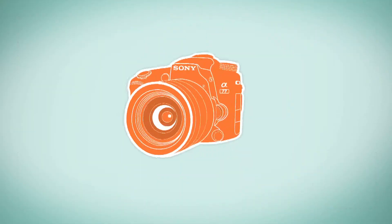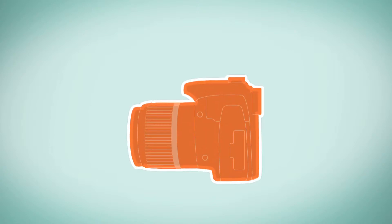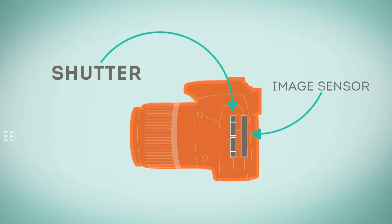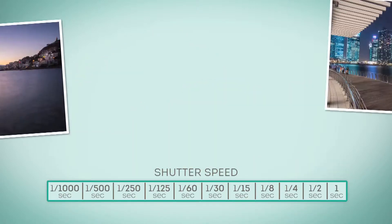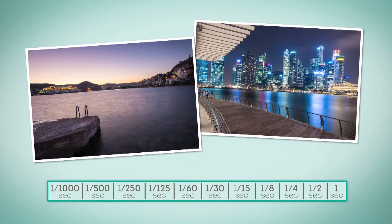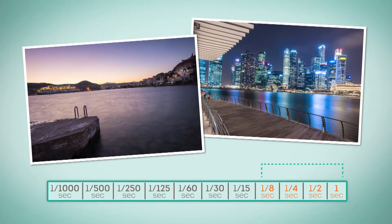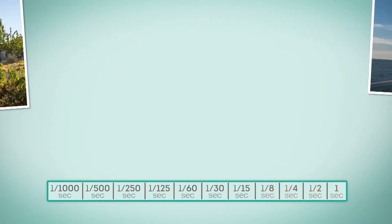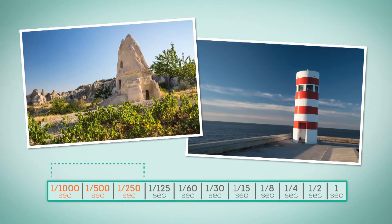With many DSLR cameras, the shutter is a mechanical device just in front of the image sensor. It opens to let light in so that the sensor can register the light to form an image. We use the shutter speed to control the shutter. In dark conditions where more light is needed, the shutter opens for a longer duration. In bright conditions where less light is needed, the shutter opens for a shorter duration.